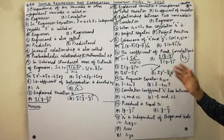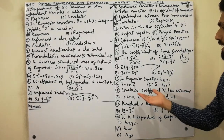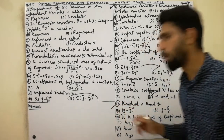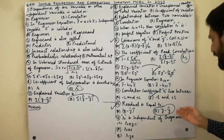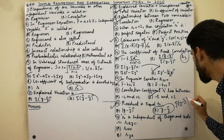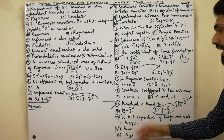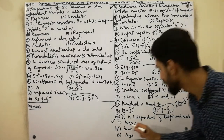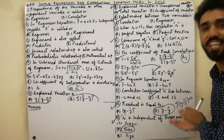The regression constant A is given by: A = Ȳ − B·X̄. The correlation coefficient R lies between −1 and +1. Residual = Y − Ŷ, where Ŷ is the estimated value. Must remember that Σ(Y − Ŷ) = 0. Also, R is independent of change of origin and scale, meaning R_XY = R_UV.